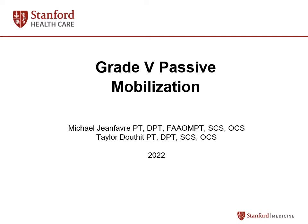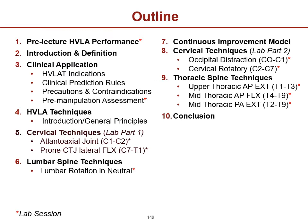Okay, in this part four of four for this voiceover of the grade five passive mobilizations of the spine, we will talk about the specific techniques as well as the mechanics and creating the artificial barriers and mid-range barriers of each of the regions. We'll also go through the conclusion and some of the additional resources provided.